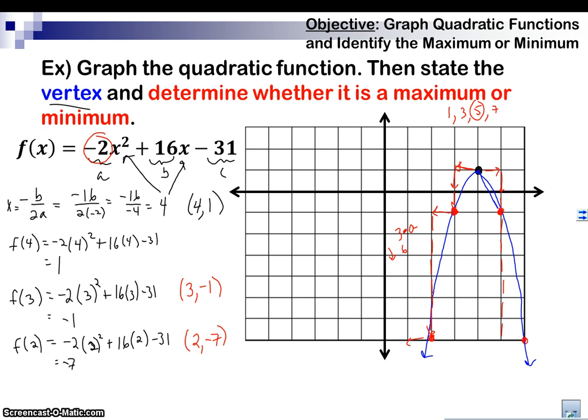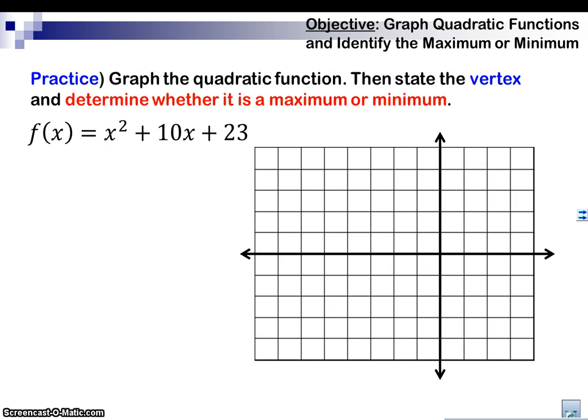Let's take a look at another one. The next one's a practice one. So find the vertex by doing negative b over 2a, which is negative 10 over 2 times 1, which is negative 5. Plug in negative 5, so we want f of negative 5: negative 5 squared plus 10 times negative 5 plus 23. It's going to give me 25 minus 50 plus 23, which is going to give me negative 2. So my vertex is going to be negative 5 comma negative 2. So 1, 2, 3, 4, 5.